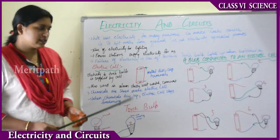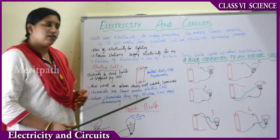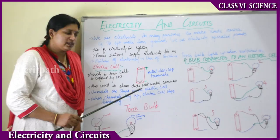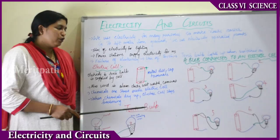Other than torch bulbs, cells are used in alarm clocks, TV remotes, wristwatches, cameras, radios, and transistors — cells are used everywhere. Inside the cell there are chemicals. When these chemicals dry up, the cell stops functioning, and at that stage we buy new cells and replace them.